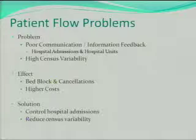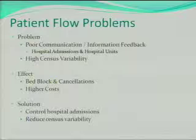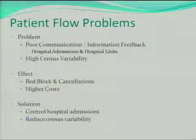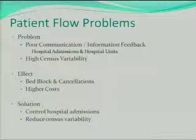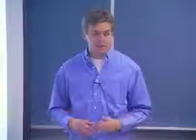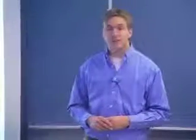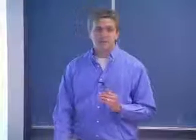In many hospitals, there are patient flow problems. The problem arises when there is poor communication or poor information feedback between the hospital admissions and hospital units — basically where the people admitting patients aren't getting the information they need to know how full or empty the hospital is. This results in high census variability, or high variability in the number of people in the hospital at any given time.